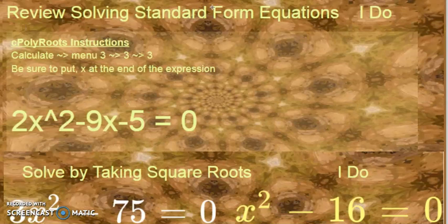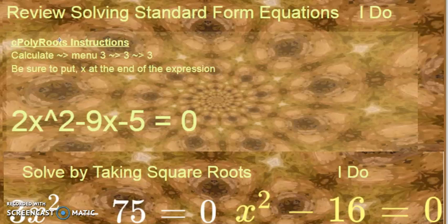Let's review solving a standard form equation with a calculator. On your TI-Inspire, here's your cPolyRoots instructions. You press calculate, menu, 3-3-3. Be sure to put X at the end of the expression and don't put that equals zero. If it's something other than equals zero, you must move everything to one side until it equals zero.